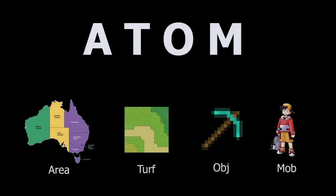In DreamMaker, Atom is the base class for all visible game objects. It's an integral part of the object-oriented hierarchy in the language. The other classes — area, turf, object, and mob — are all derived from the Atom class, inheriting its properties and methods. Every visible game element — areas, turfs, objects, and mobs — is an instance of the Atom class or one of its subclasses. Atoms have common properties like name, icon, icon state, and location.